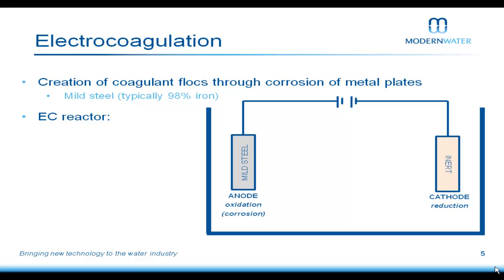Taking things back to lab scale: we have an EC reactor containing a water tank, a mild steel anode, and an inner cathode. These two complement each other. When we connect them to a power supply — the anode to the positive and the cathode to the negative — we want to rust the anode, to oxidise it and draw ions from the solid state into the ionic state.